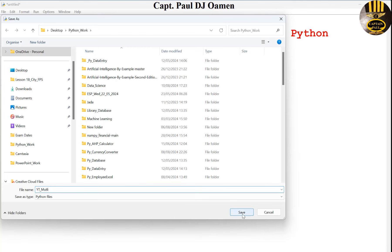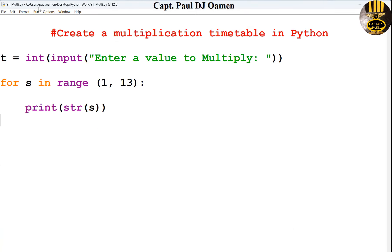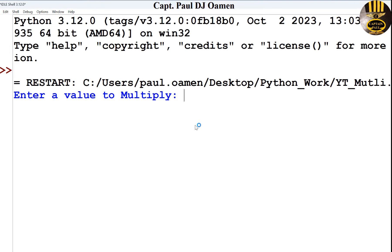So if I run it now, the system will ask me to enter a value. Let's say I enter 3, it will only generate 1, 2, 12. Look at that. So what I want you to do is to display 1 multiply by 3, give me the answer, 2 multiply by 3, and so on.